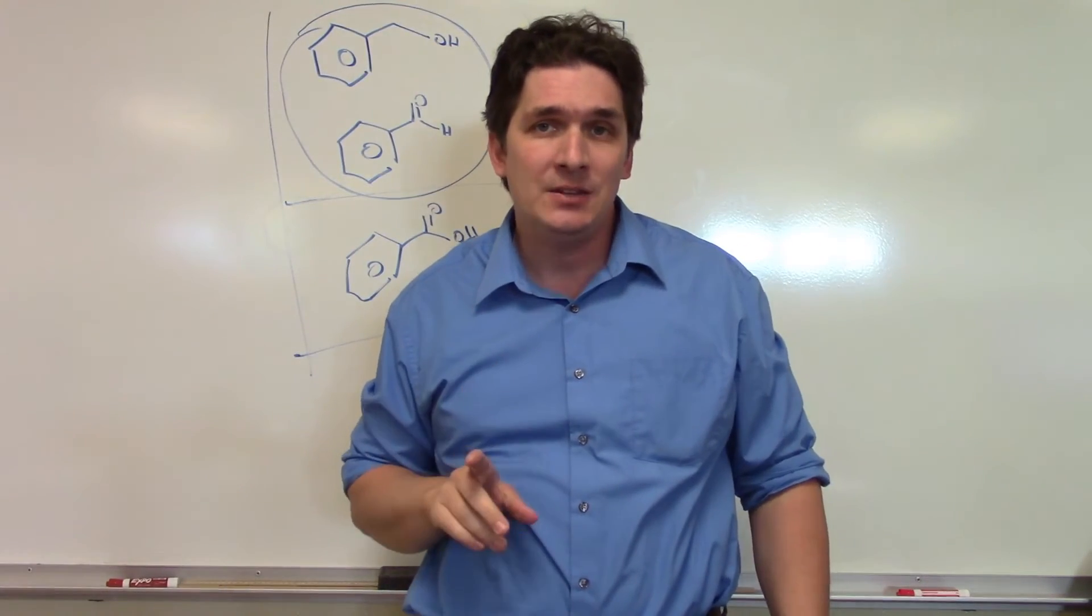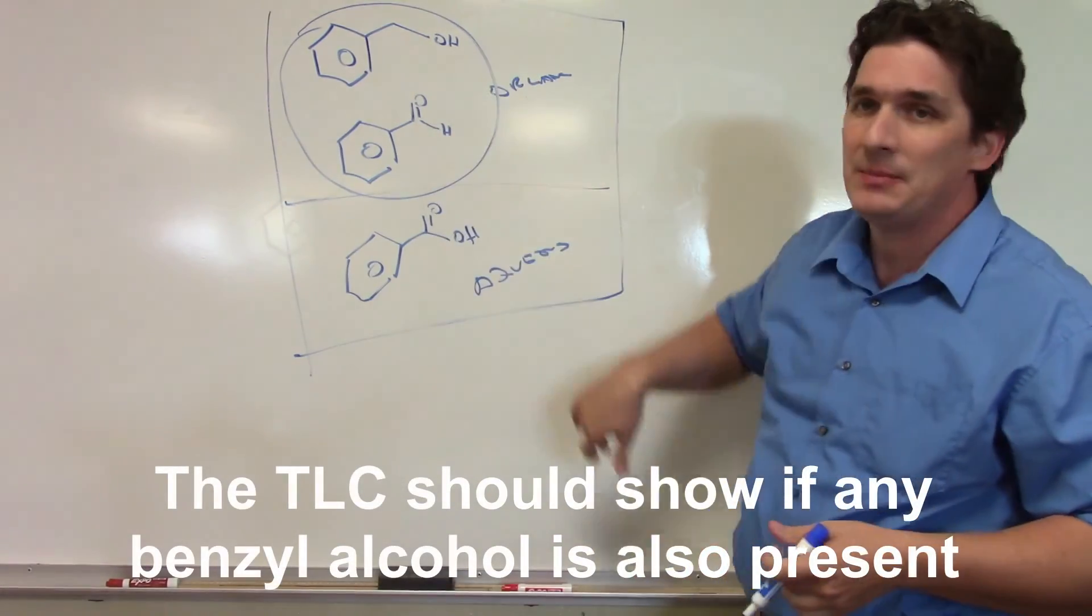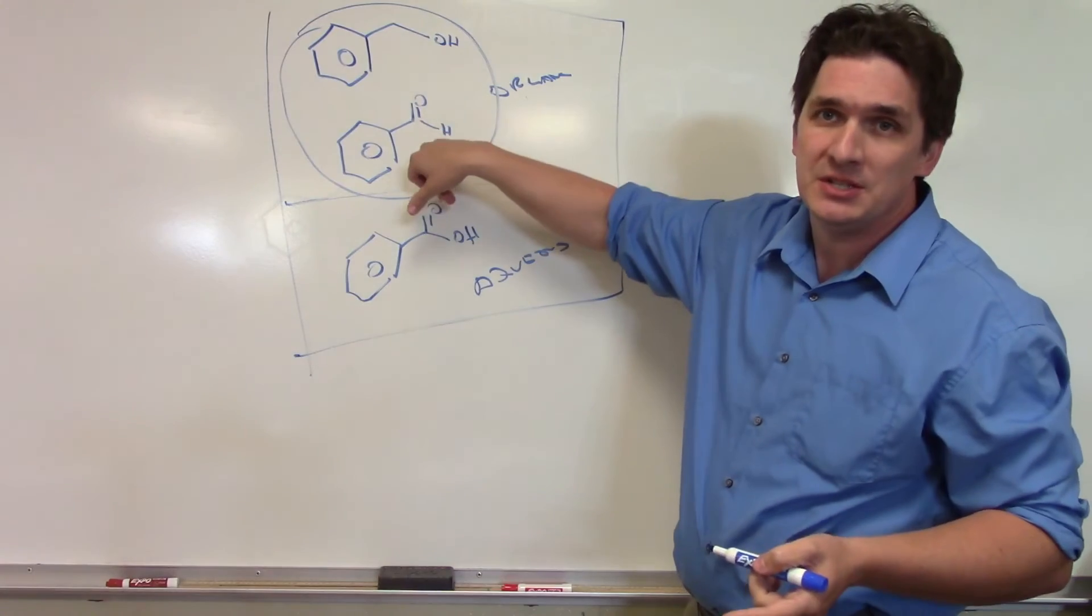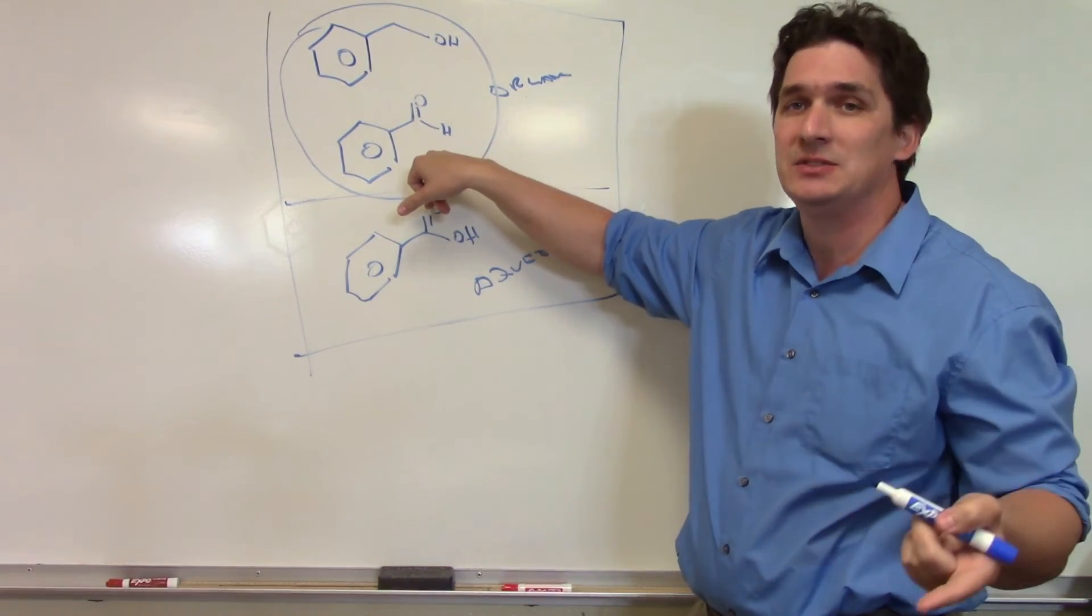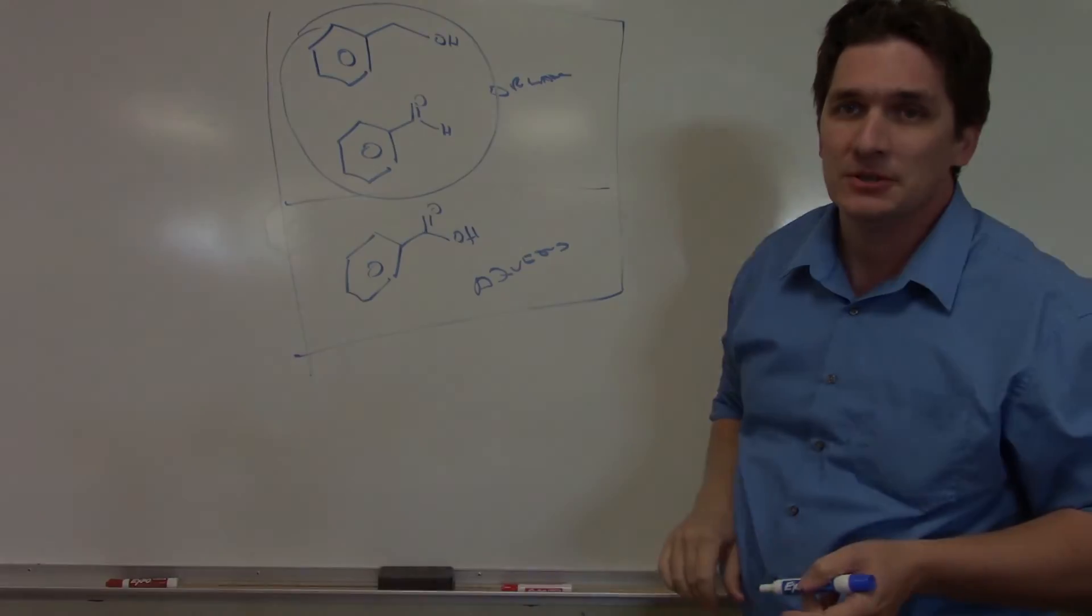But what we can do to measure is we can run a TLC. So if you look at the TLC, we have these three compounds on hand. We're going to see, based on the organic phase, one, we should see some benzaldehyde, but we'll verify that with the 2,4-dinitrophenylhydrazine. But we should also see the benzyl alcohol, and this should come out relatively pure.